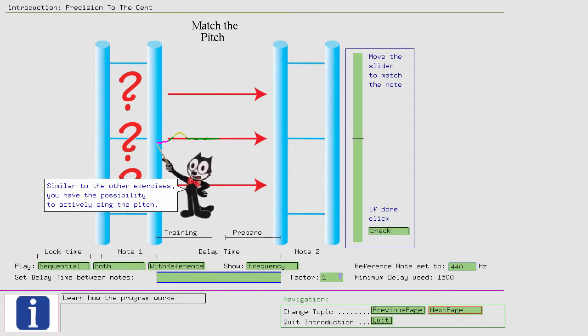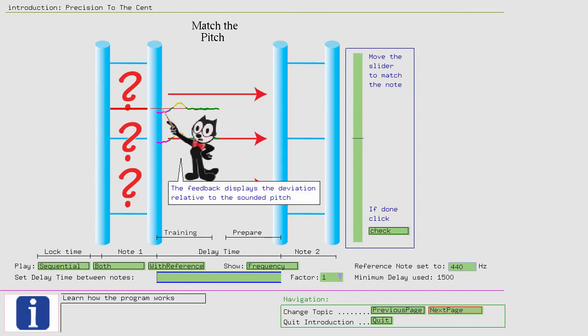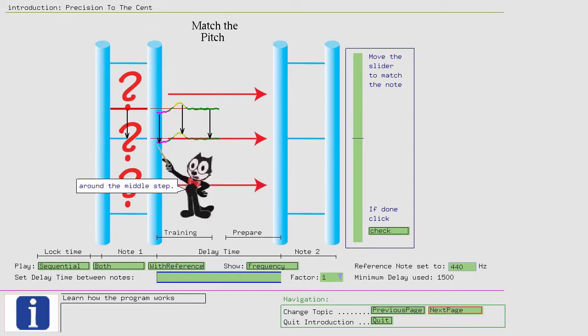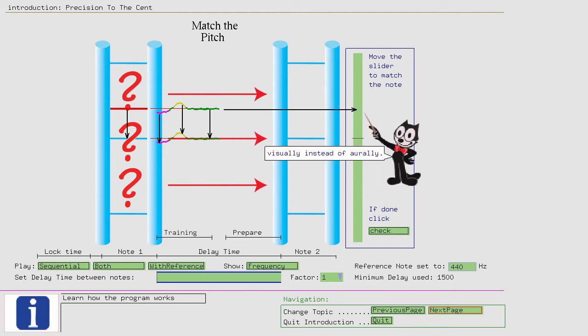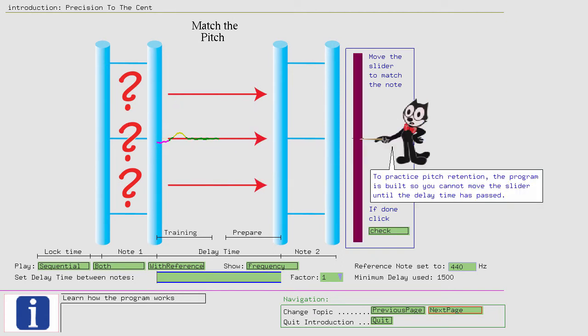Similar to the other exercises, you have the possibility to actively sing the pitch. A word of warning: the colored pitch line does not represent the pitch on the middle step. The feedback displays the deviation relative to the sounded pitch around the middle step. Otherwise, you might be tempted to identify the pitch visually instead of orally.